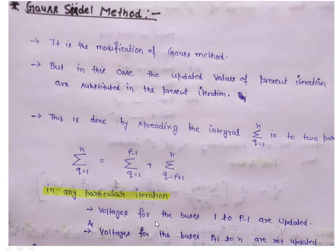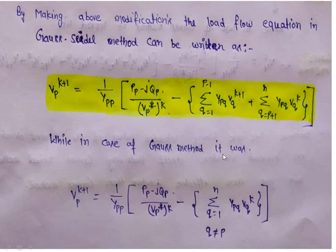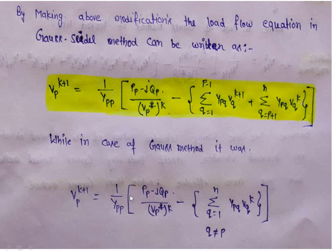Suppose we are calculating the voltage at the pth bus. Then the voltage values of bus 1 to p minus 1 should be used as updated values, while p plus 1 to n are non-updated values. We have already calculated the voltages at bus 1 to p minus 1 in the current iteration, so these values should be updated values. While in case of Gauss method, it was not like that — all voltages were from the previous iteration.